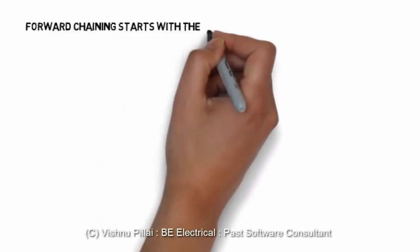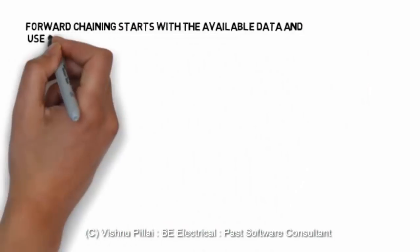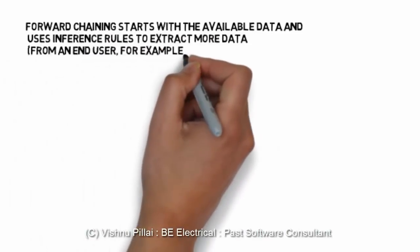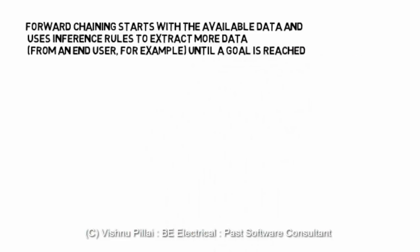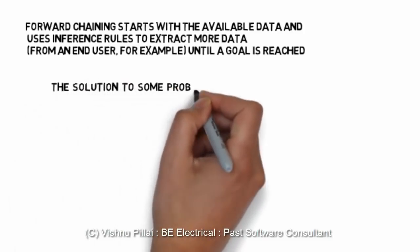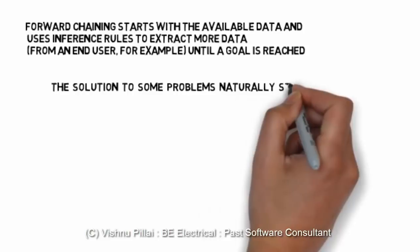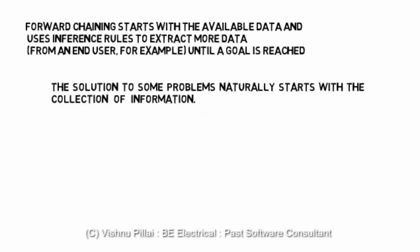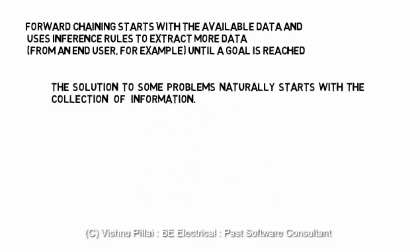In the inference engine with the data in the knowledge base, the two methods are forward chaining and backward chaining. These are basically the methods to build the algorithms in the forward way or the backward way. The forward chaining starts with the available data and uses inference rules to extract more data until a goal is reached.